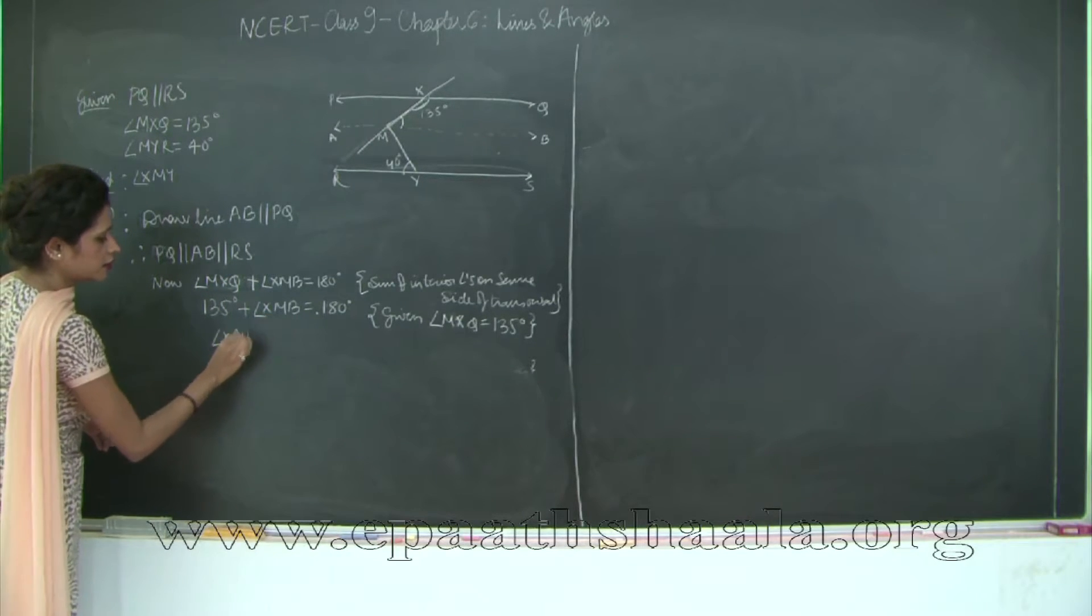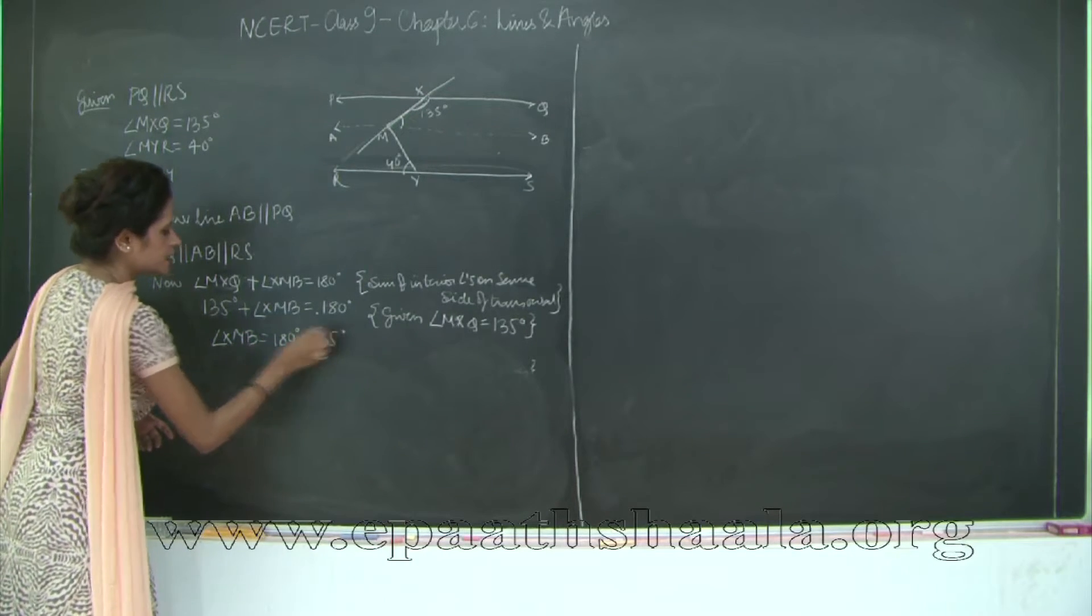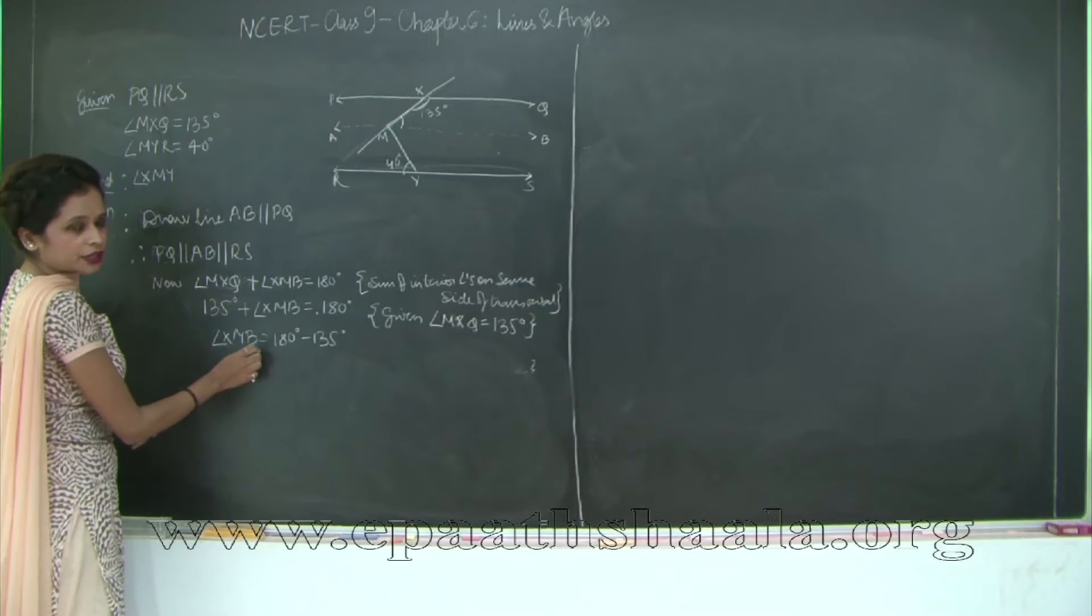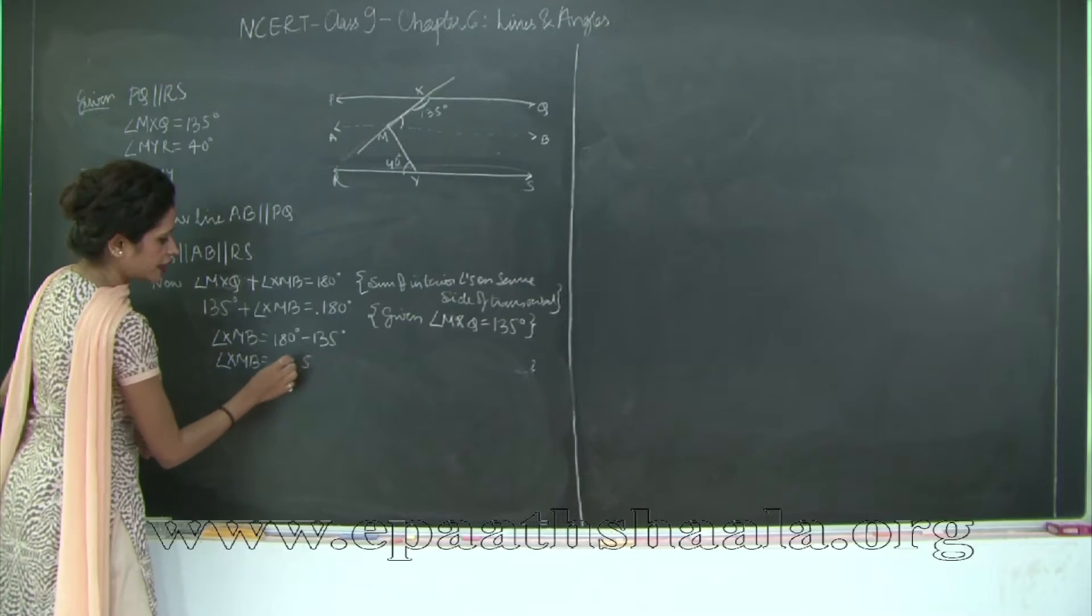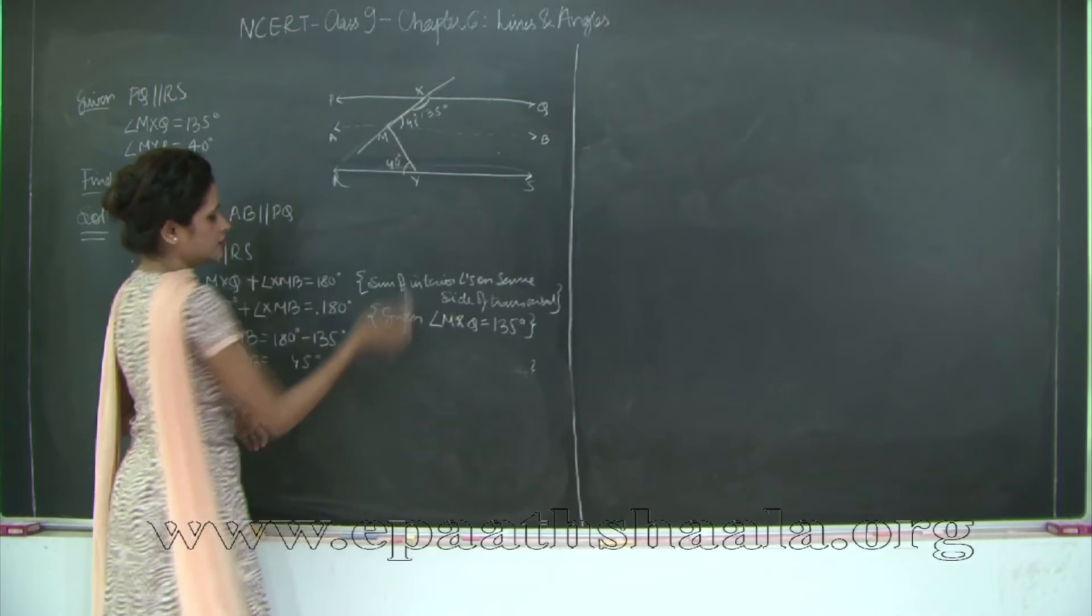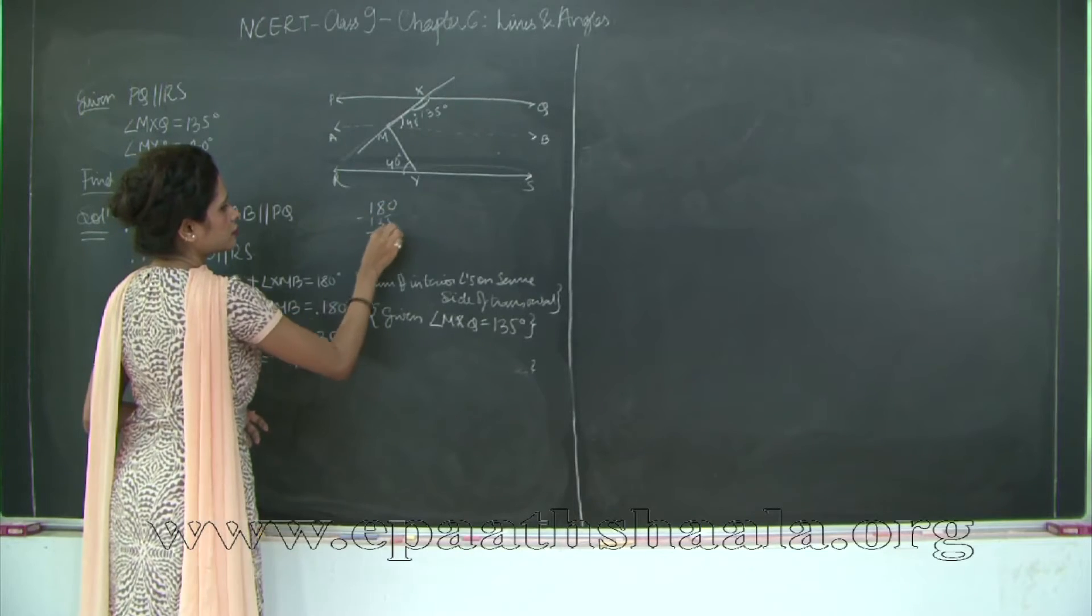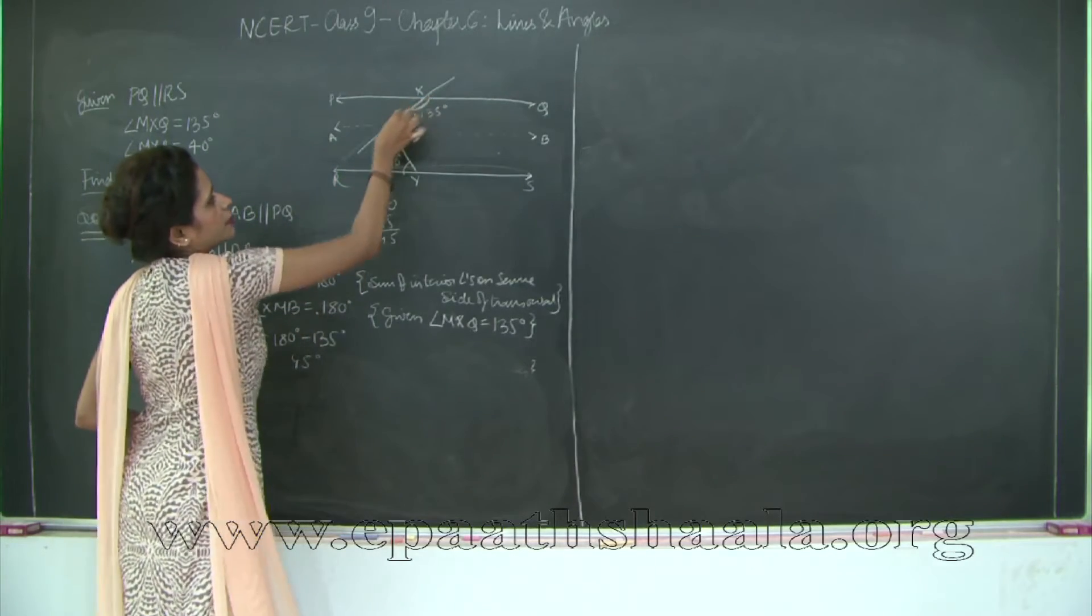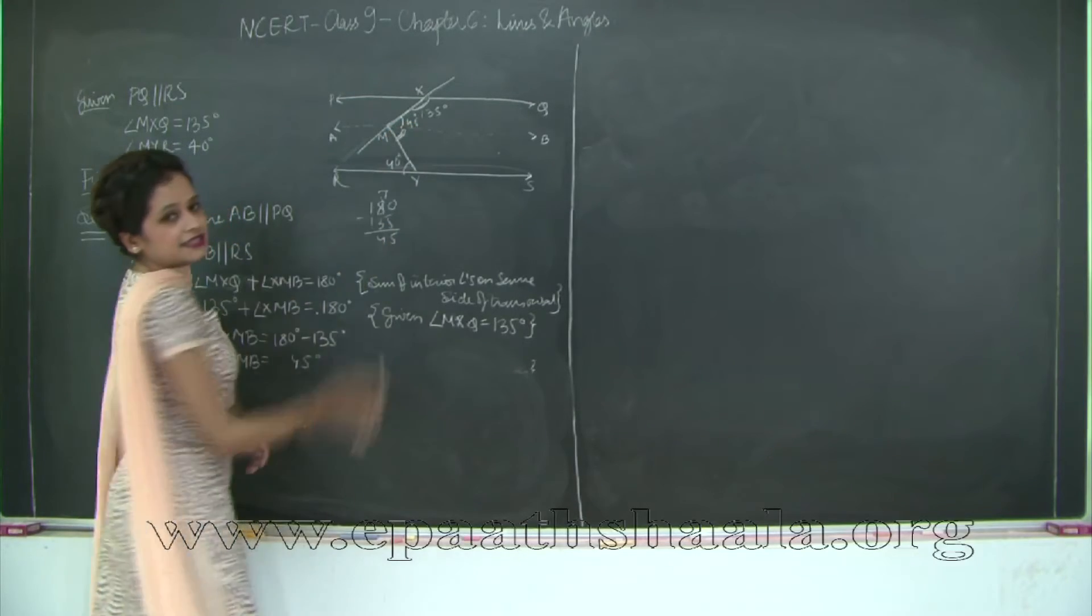So angle XMB will be 180 degrees minus 135 degrees. Because I have taken 135 on my right hand side, it's become negative. So I get the measure of my angle XMB. It is going to be 45 degrees. So this angle is 45 degrees. But I need to find the measure of this angle. So I need to find this angle also.